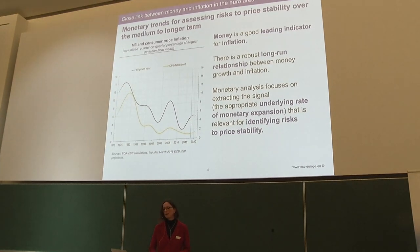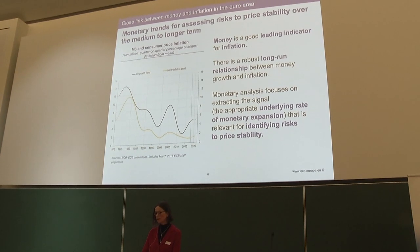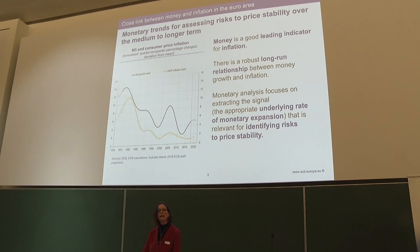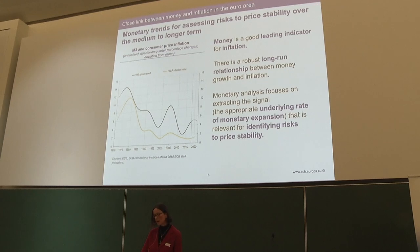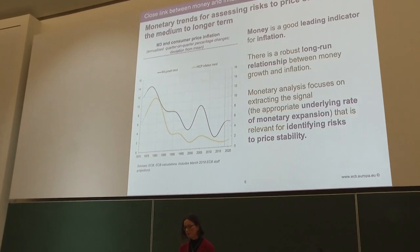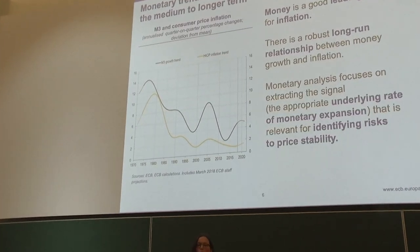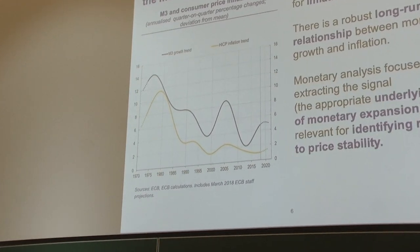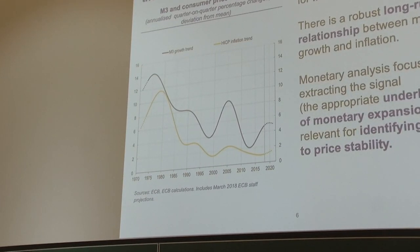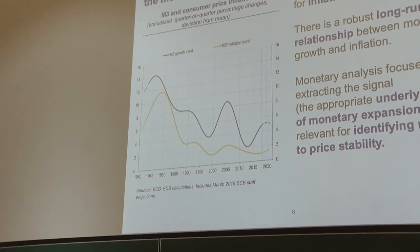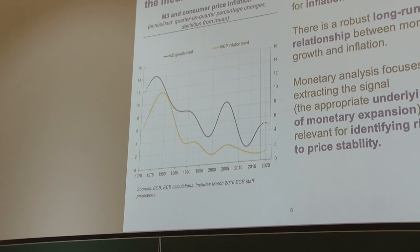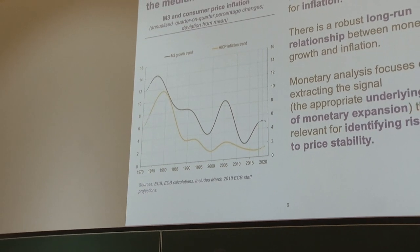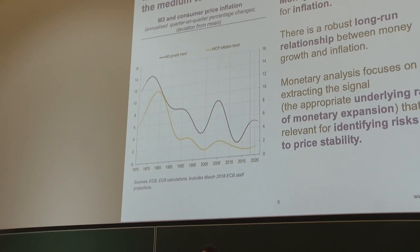This chart shows two lines of long-term developments: the blue line is smoothed money growth and the yellow line is smoothed HICP inflation. There is a long-run relationship — when money growth is high, inflation tends to be high, and when money growth declines, inflation declines. However, there is not a one-to-one relationship; there are swings in money growth not mirrored by inflation, so the relationship exists but is not simple.